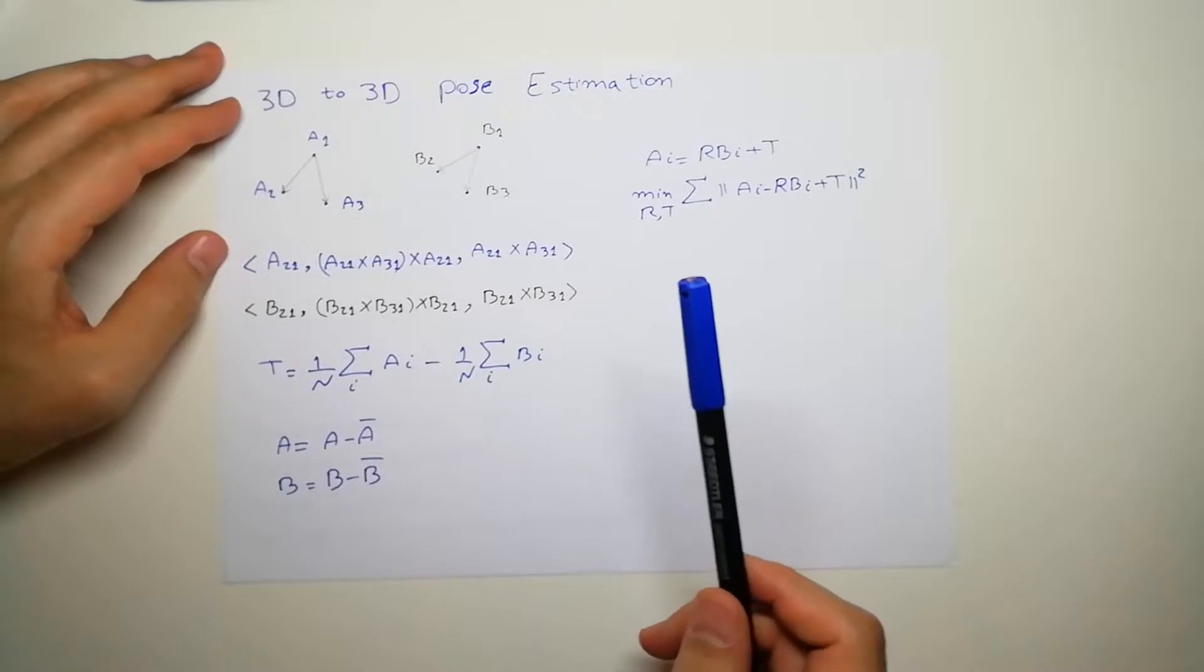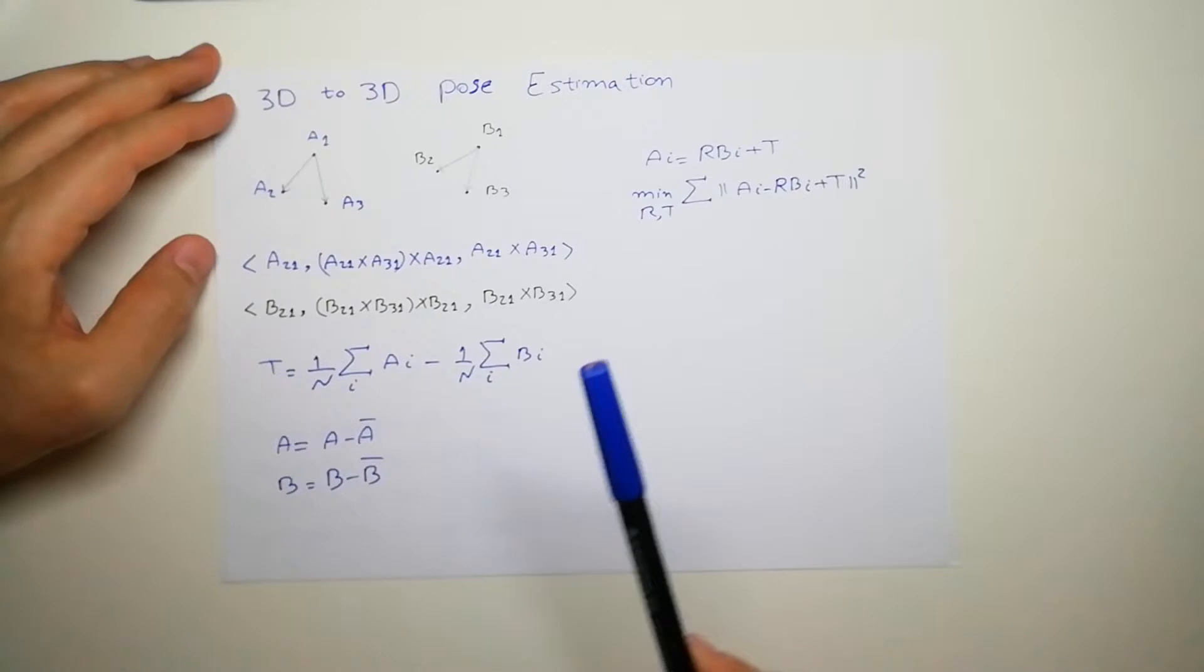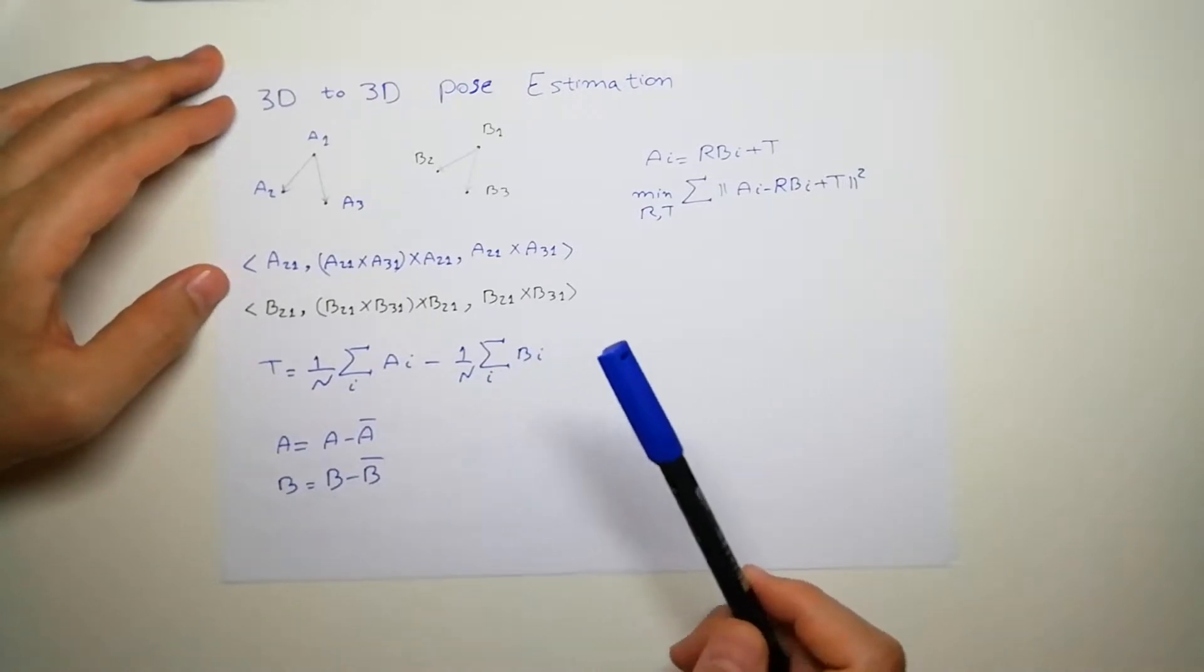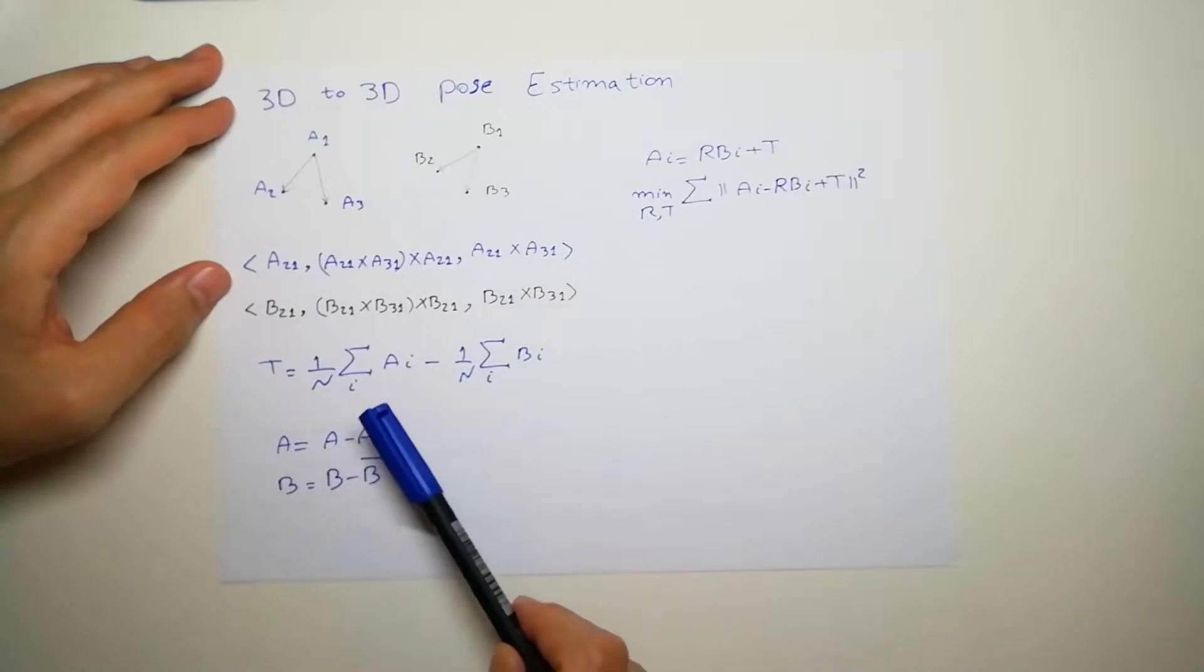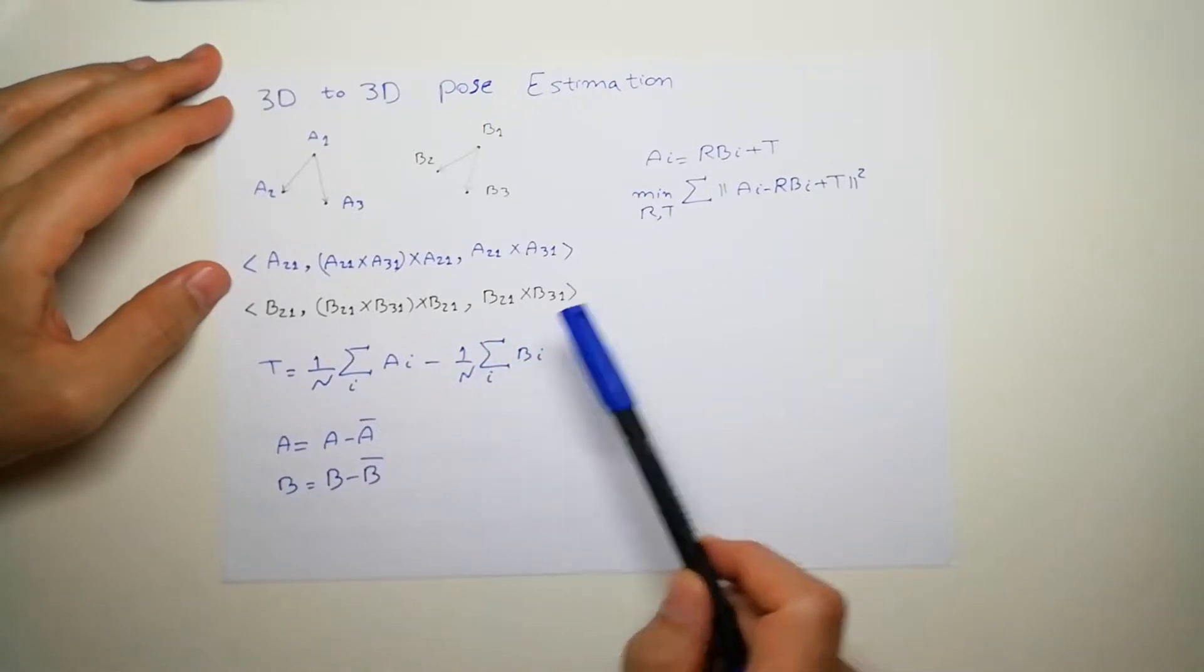Okay, let's first find the translation. Finding translation is pretty easy. All you have to do is subtract all of your points from the mean. And then the line that connects these two centers is your translation. It's pretty easy.